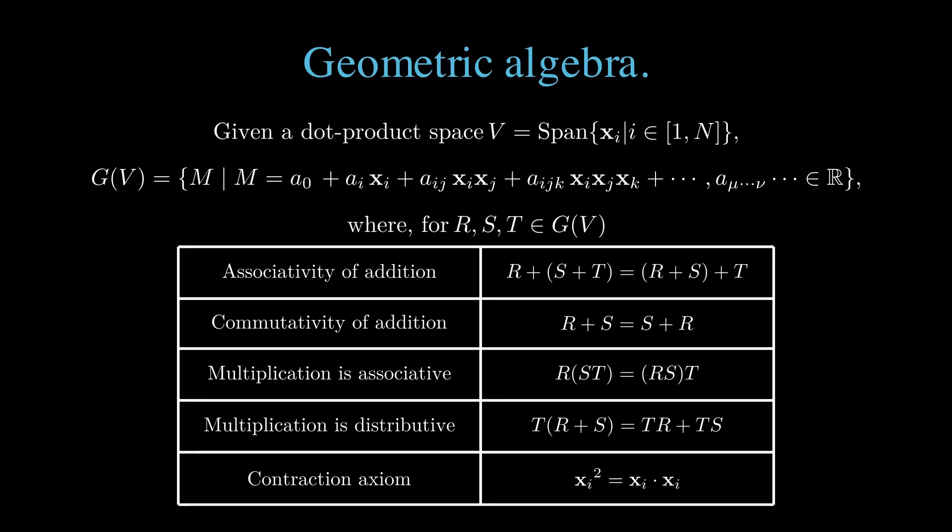The square of any vector products found within a given multi-vector are subject to the contraction axiom, that is, the square of any vector is the dot product of that vector with itself, i.e. the squared length of that vector.